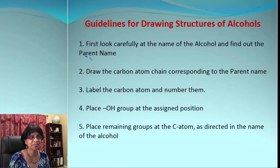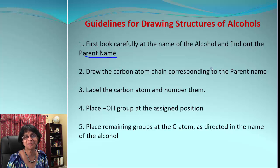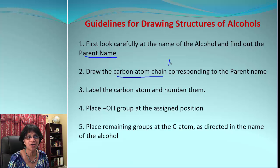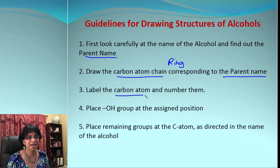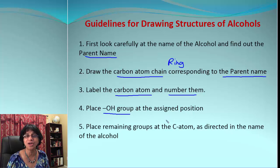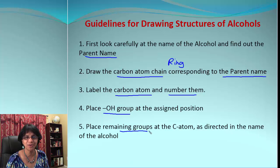The very first thing we need to look for is the parent name for the alcohol — is it going to be a chain or a ring? Once we find the parent name, the next thing is we either draw a carbon atom chain or, if it's a ring, we draw the ring that corresponds to the parent name. Then we label and number the carbon atoms, place the OH group at the assigned position, and position any remaining substituents as directed in the name.